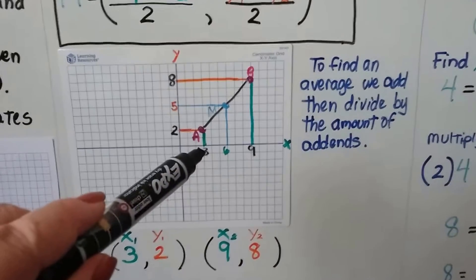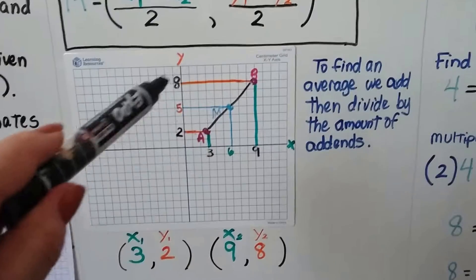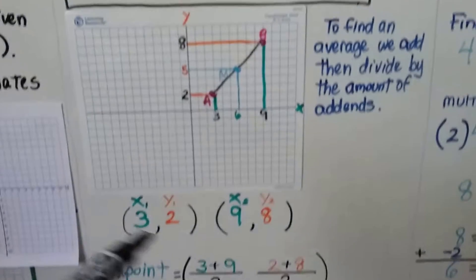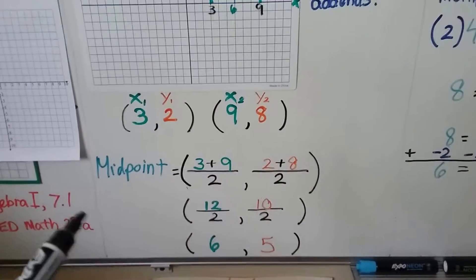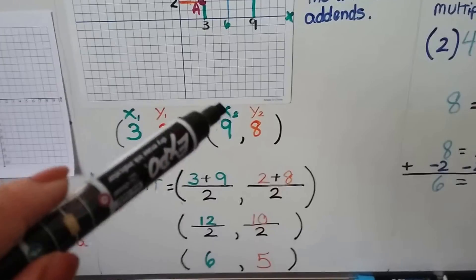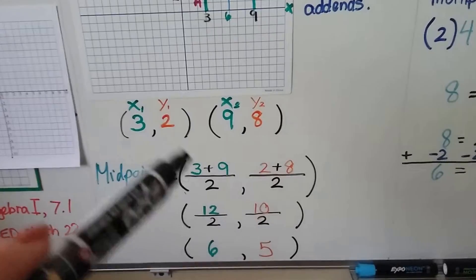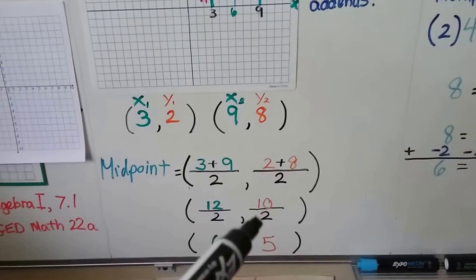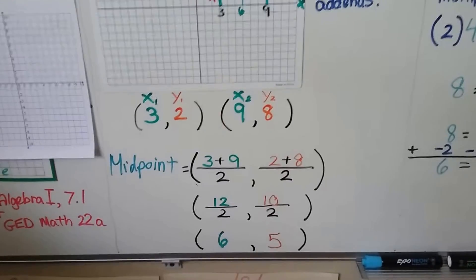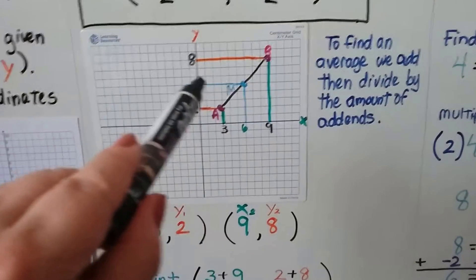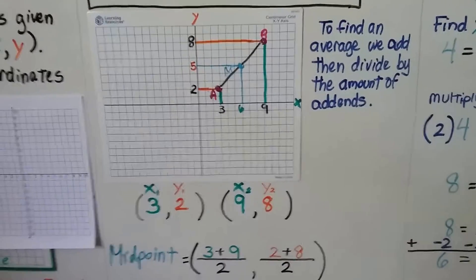We have point A at (3, 2) and point B at (9, 8). Using the midpoint formula, x₁ + x₂ gives us 3 + 9 = 12, divided by 2 is 6. Then y₁ + y₂ gives us 2 + 8 = 10, divided by 2 is 5. So the midpoint is at (6, 5) — it's dead center in the middle.